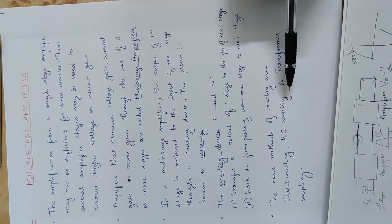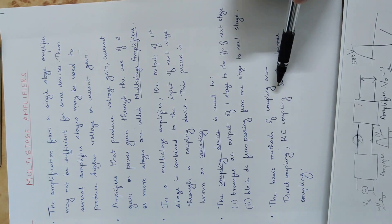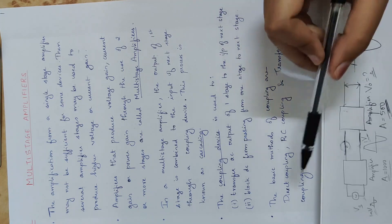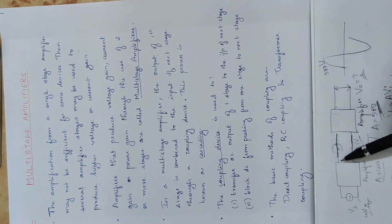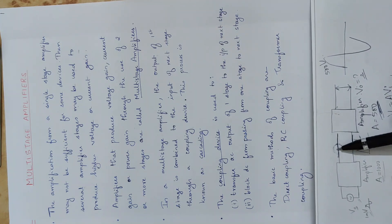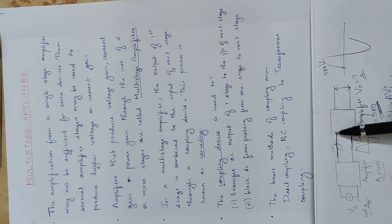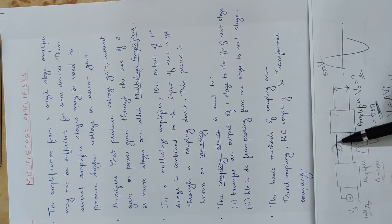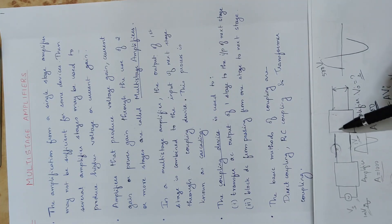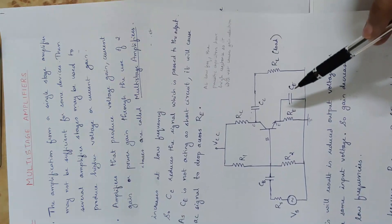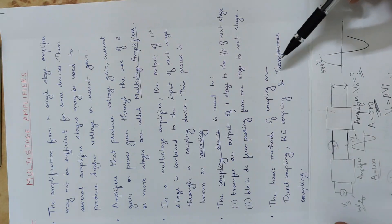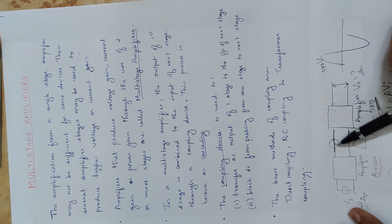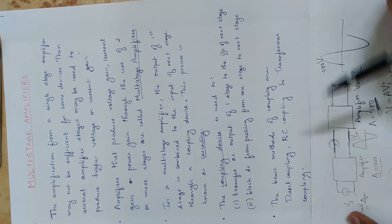There are three basic methods of coupling. First is direct coupling, where amplifiers are connected directly with no coupling element between them. Second is RC coupling, where a resistance and capacitor are used — this is the type we have already studied. Third is transformer coupling, where a transformer is used to join the two amplifier stages.